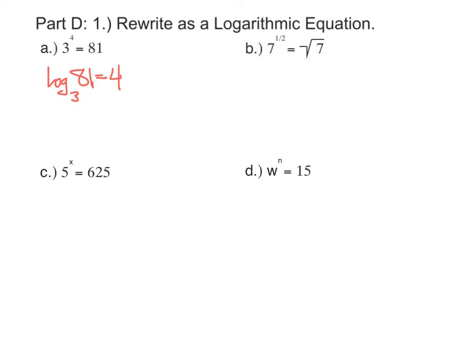In part B, keep the base the same, log base 7. Switch the other two. Log base 7 of square root 7 is equal to 1 half.